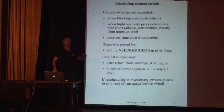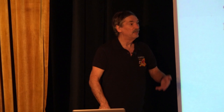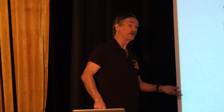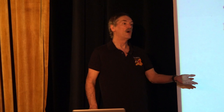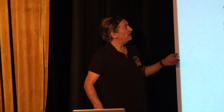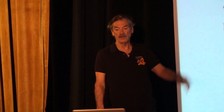What causes tens or hundreds of thousands of context switches per second? The most common case is voluntarily going to sleep: a process does a system call that can't proceed — for example, reading from the keyboard when the user hasn't typed anything, waiting for a network packet, or waiting for disk IO to complete. This is called a voluntary context switch — you're saying, I don't need the CPU anymore, run something else.